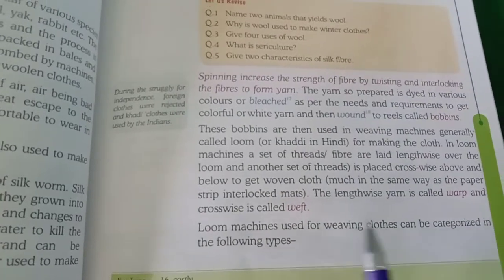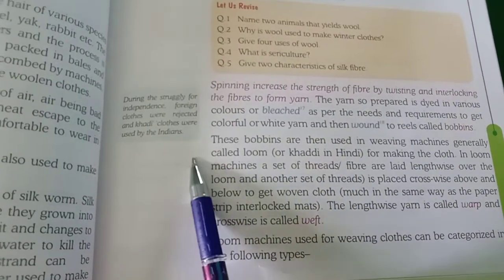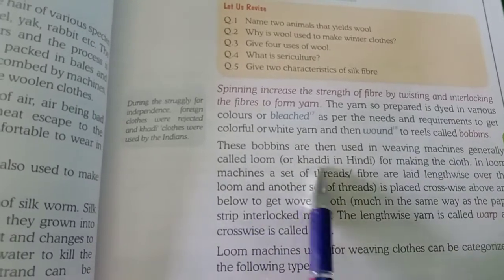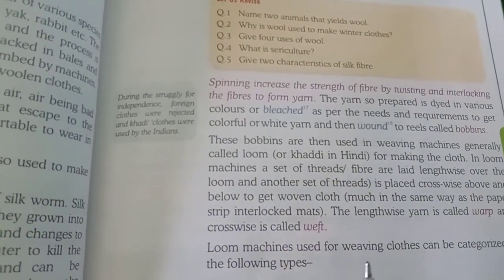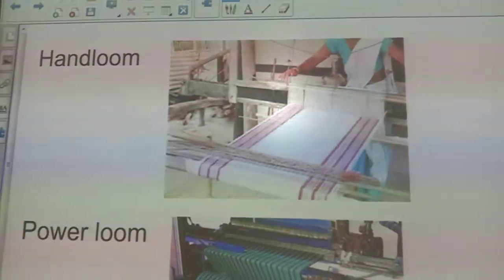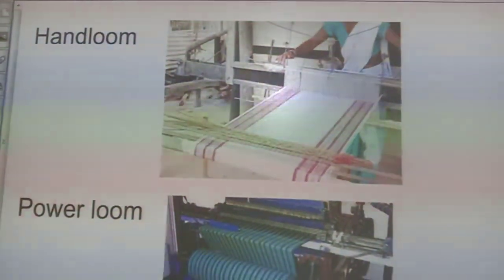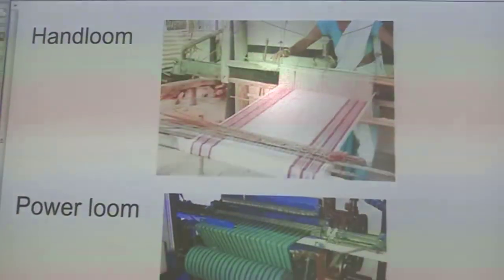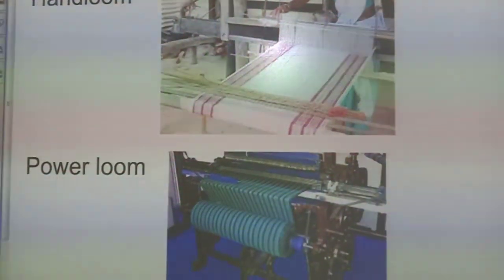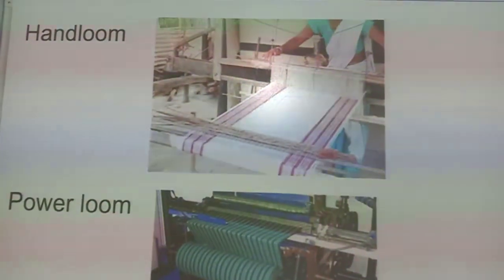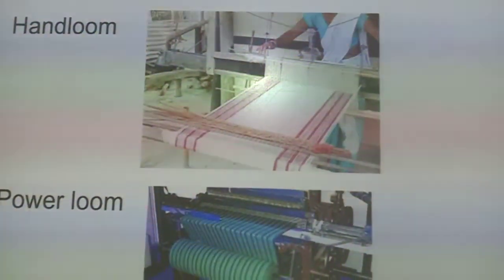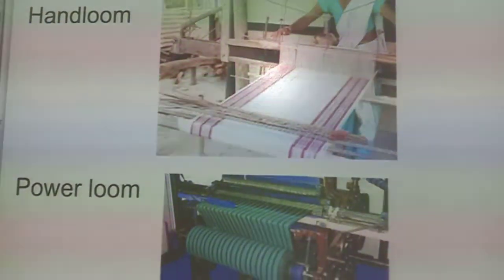Now come to loom machines — how fiber is converted to thread and thread is converted to the cloths that we wear. Looms are of two types: hand looms and power looms. Hand looms are operated by hand and power looms are run by electricity. Fiber is converted to thread, then thread is converted to cloths with the help of these two looms.